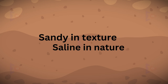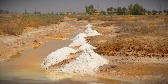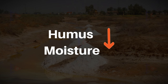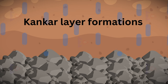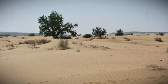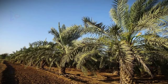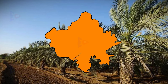Arid soil ranges from red to brown in color. It is generally sandy in texture and saline in nature; in some areas the salt content is very high and common salt is obtained by evaporating the water. Due to dry climate and high temperature, evaporation is faster and the soil horizons are occupied by kankar (calcium carbonate). The kankar layer formation in the bottom horizons restricts water infiltration. After proper irrigation, these soils become cultivatable, as has been the case in western Rajasthan.